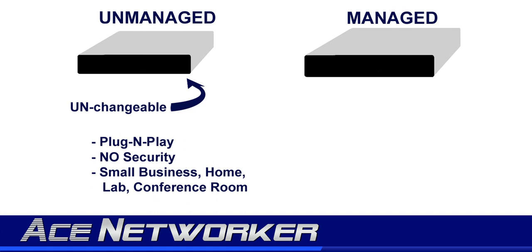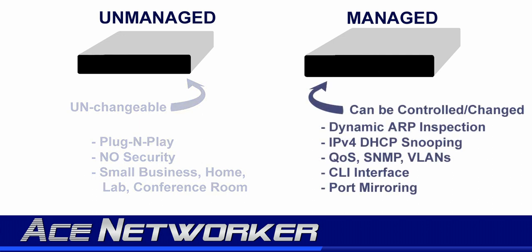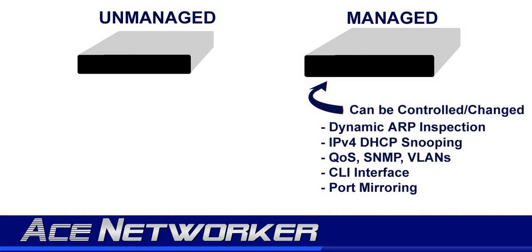On a managed switch, you're going to find things that you can alter and tweak the way you want to. Features include dynamic ARP inspection, IPv4 DHCP snooping, QoS (quality of service), SNMP, VLAN configuration, CLI interfaces and commands, IP routing on some Layer 2 or Layer 3 switches, port mirroring, and redundancy. All of these features are available on a managed switch.